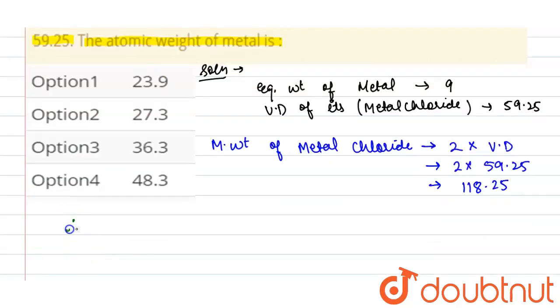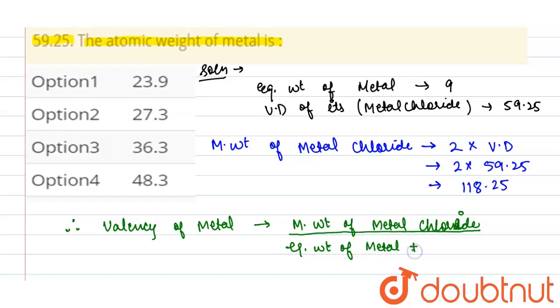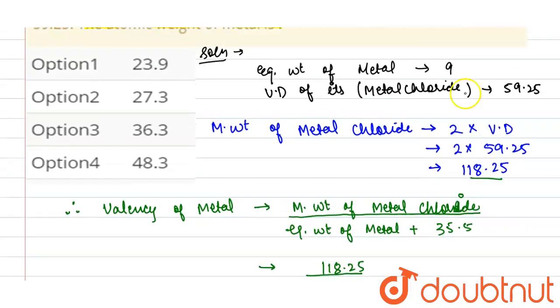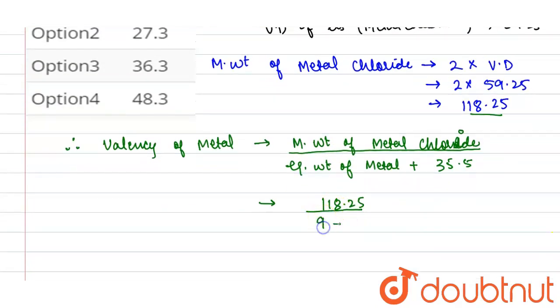Now the valency of metal can be calculated as molecular weight of metal chloride divided by equivalent weight of metal. So it will be calculated as molecular weight of metal chloride is 118.25 gram, equivalent weight of metal chloride is 9, so 9 plus 35.5, so it will be 118.25 divided by 44.5.